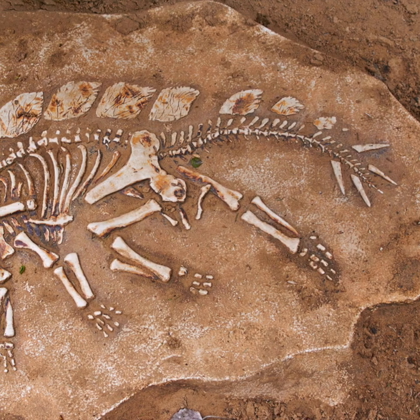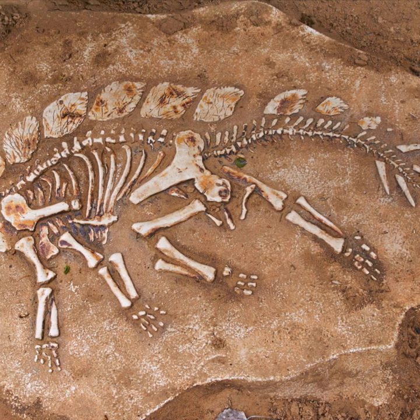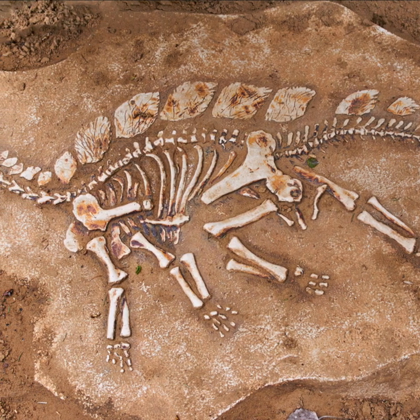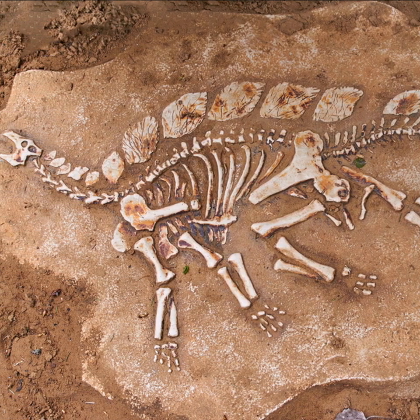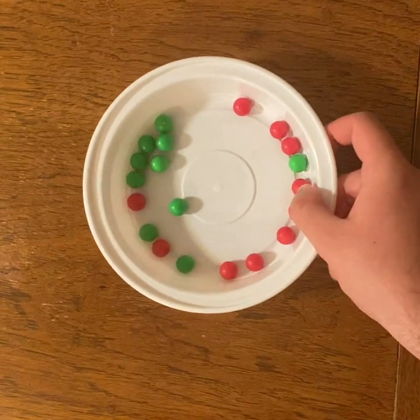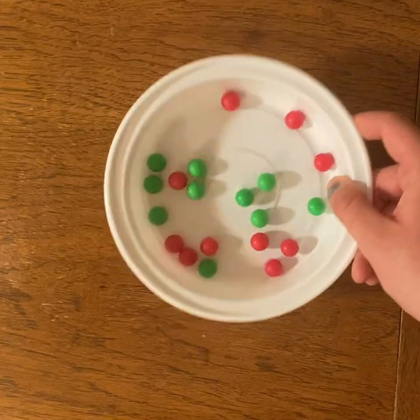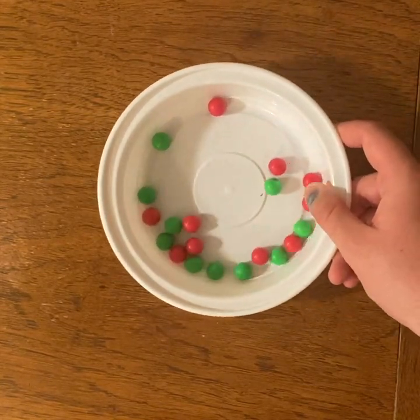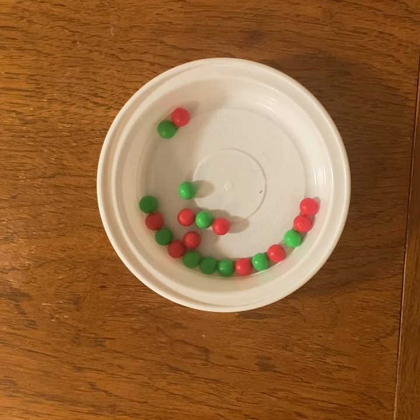There are other issues that these dating methods have as a whole that make it extremely difficult to produce an accurate date. Consider these following points. Point 1: the starting point of the sample's decay is unknown. You don't know how many isotopes were initially present when it started to decay. This would be as if you had a bowl full of green and red marbles, although nobody actually exchanged any marbles and this is what the bowl initially started with — you would have to make an assumption based on something you had not seen.